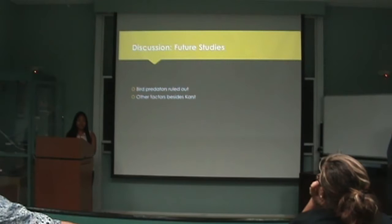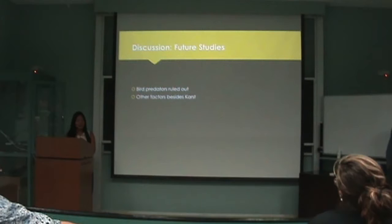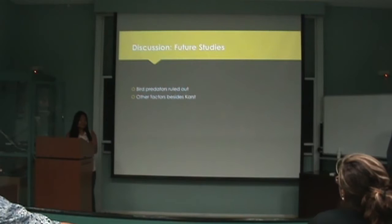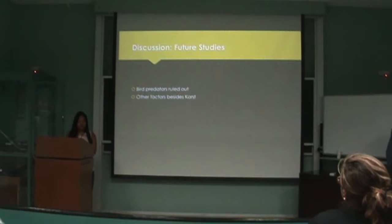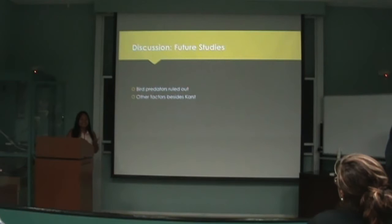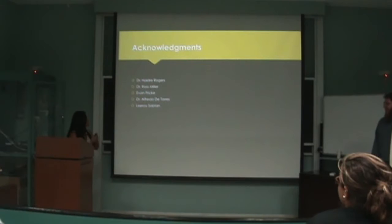For future studies, since bird predators were ruled out, you can still look at other possible predators — monitor lizards, microbes, and possibly flatworms. Besides karst, other environmental factors could be looked at, like canopy cover and possibly the moss cover that was more prevalent on Guam. Since food availability was ruled out, maybe other sources of food could be investigated, like specifically looking at food preference of hermit crabs. This looked like a simple project, but it involved a lot of physical activity, morning and midnight. We had fun doing it, and we'd like to acknowledge everyone on the list and our classmates.